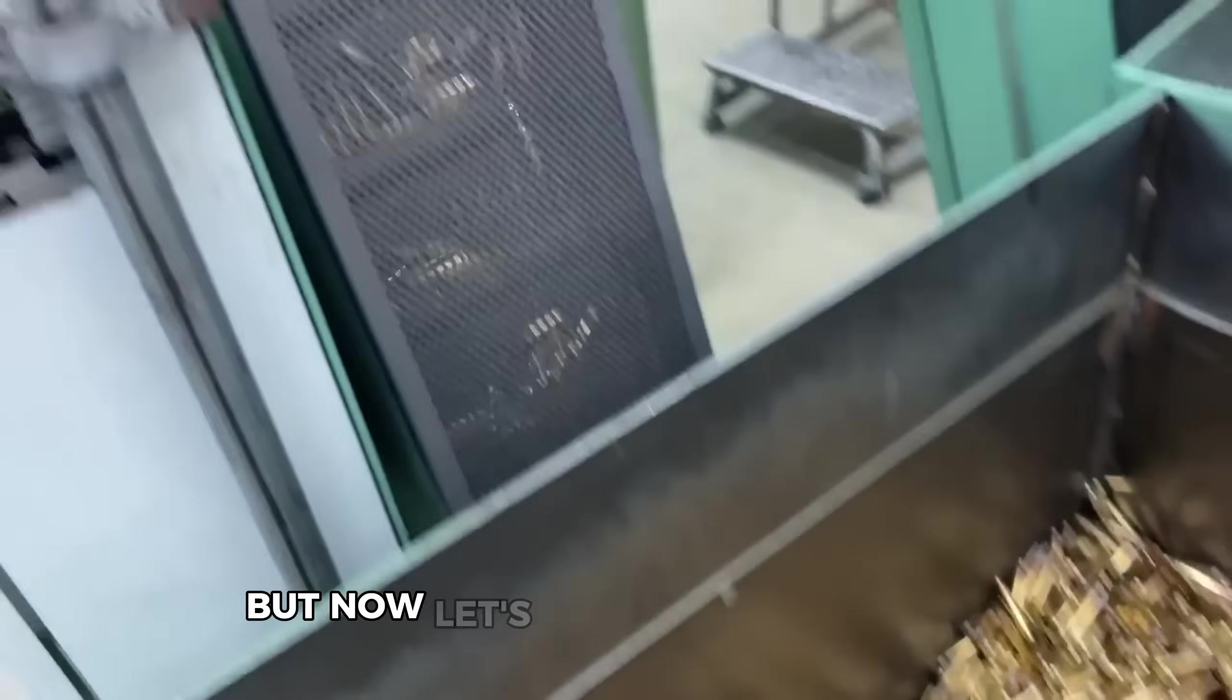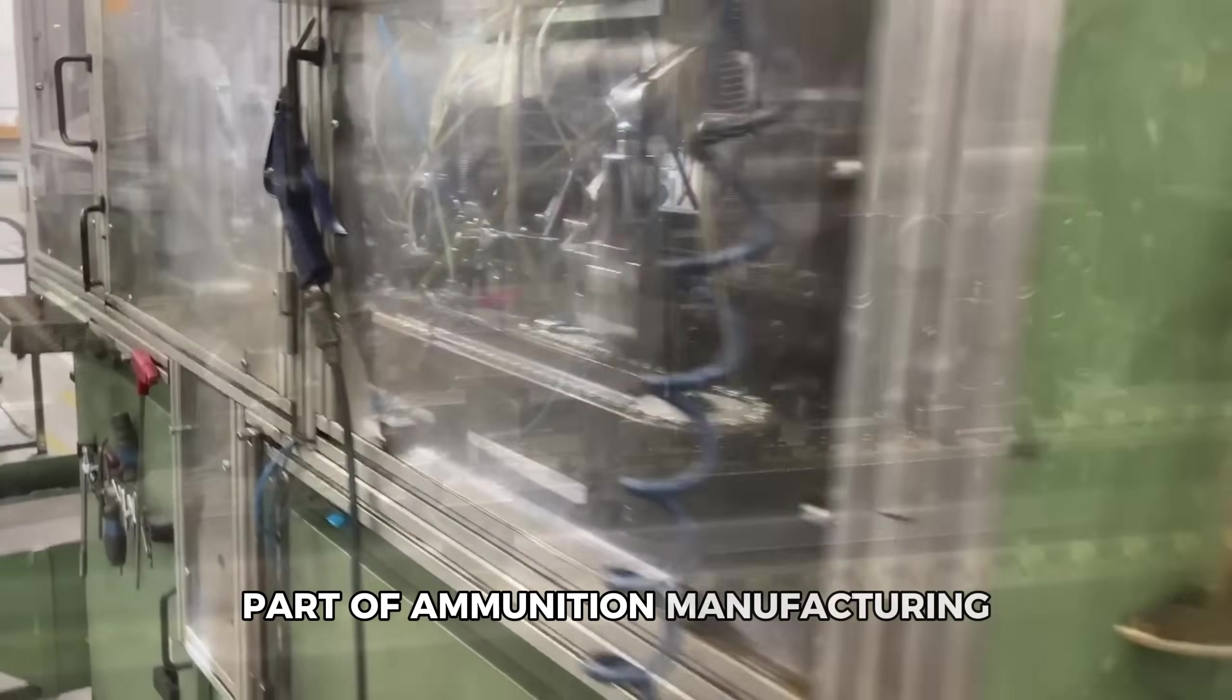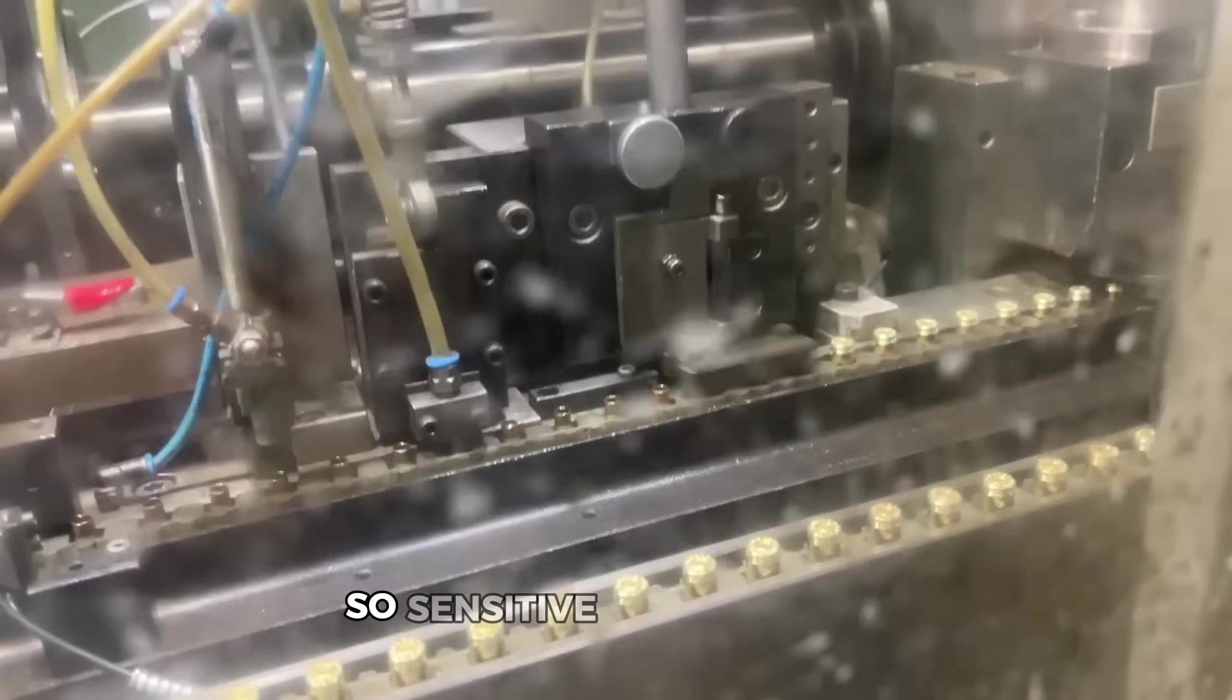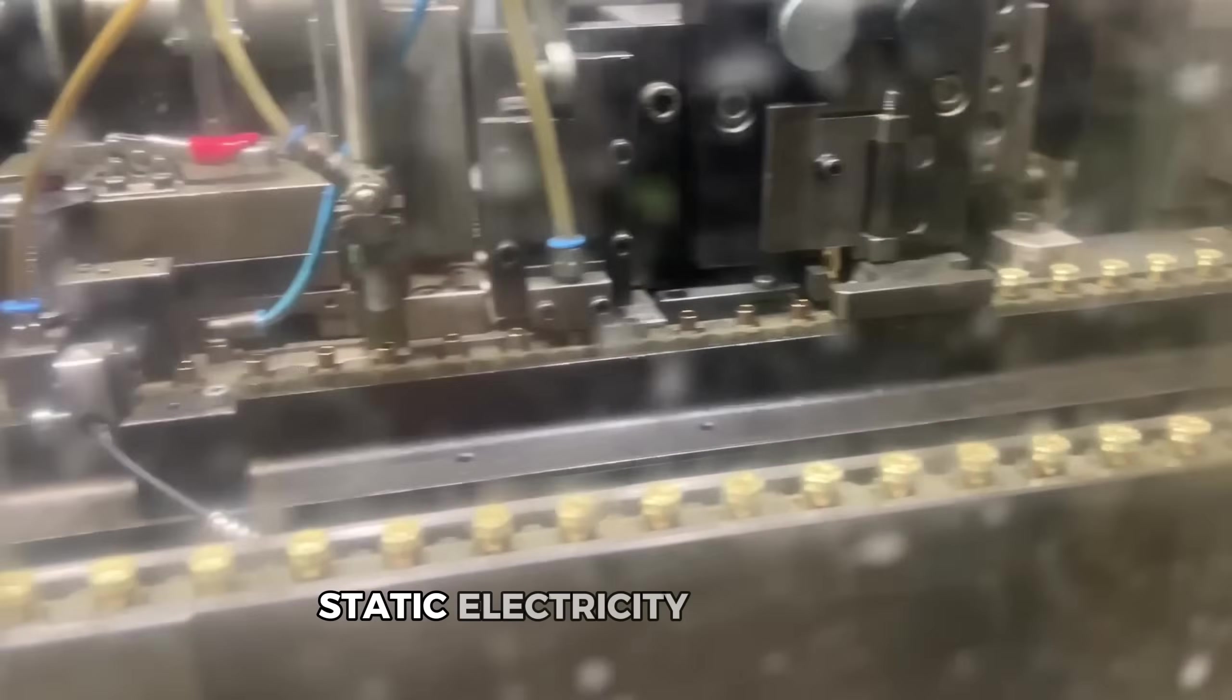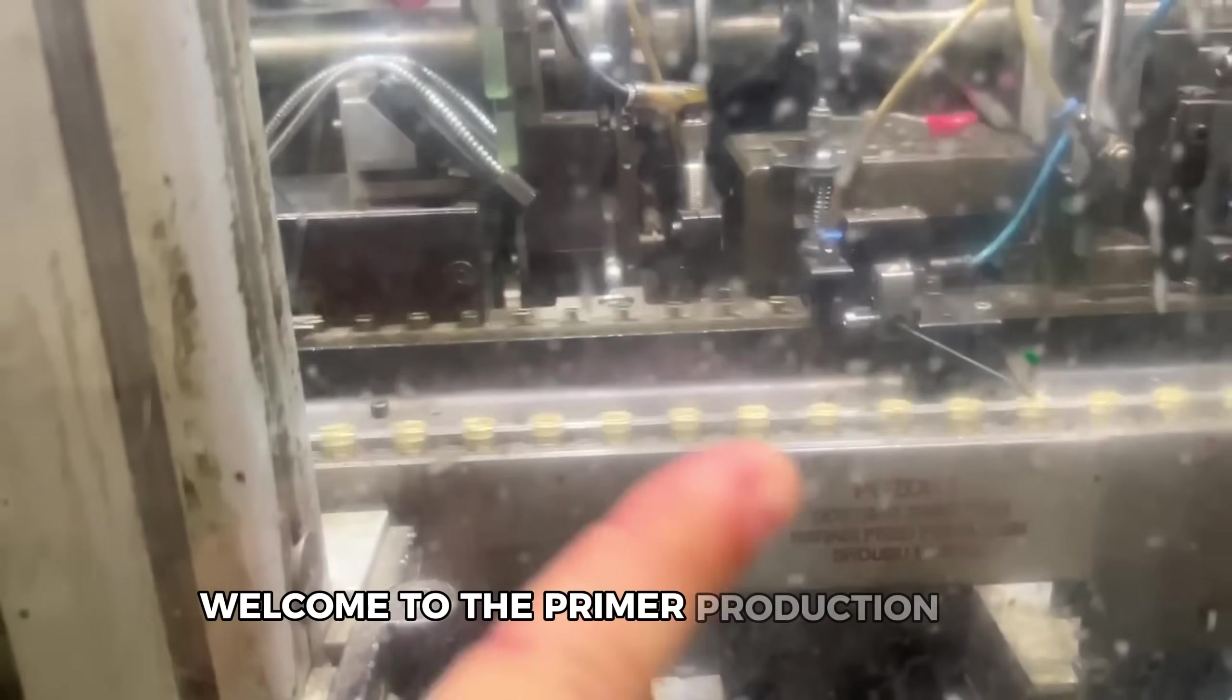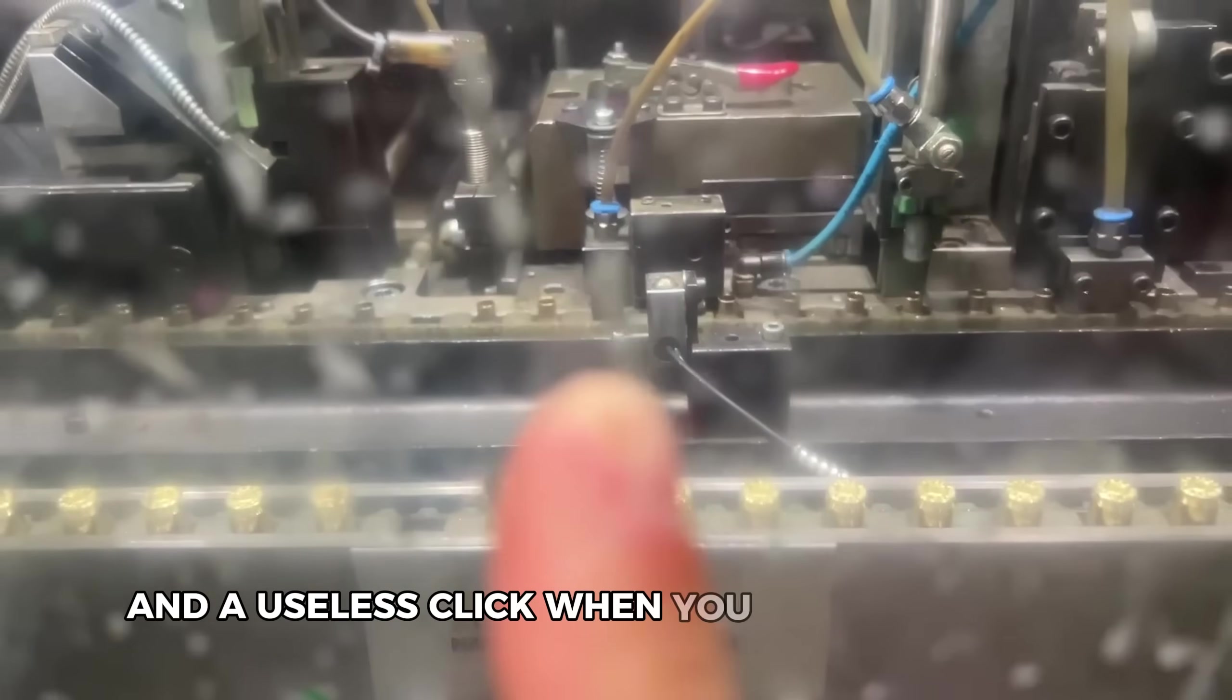That recyclability of brass cases is impressive. But now, let's look at the smallest yet potentially most dangerous part of ammunition manufacturing. What happens in a room where workers handle explosives so sensitive that a simple static electricity discharge could trigger a catastrophic chain reaction? Welcome to the primer production line, where microscopic imperfections can mean the difference between a perfect shot and a useless click when you pull the trigger.